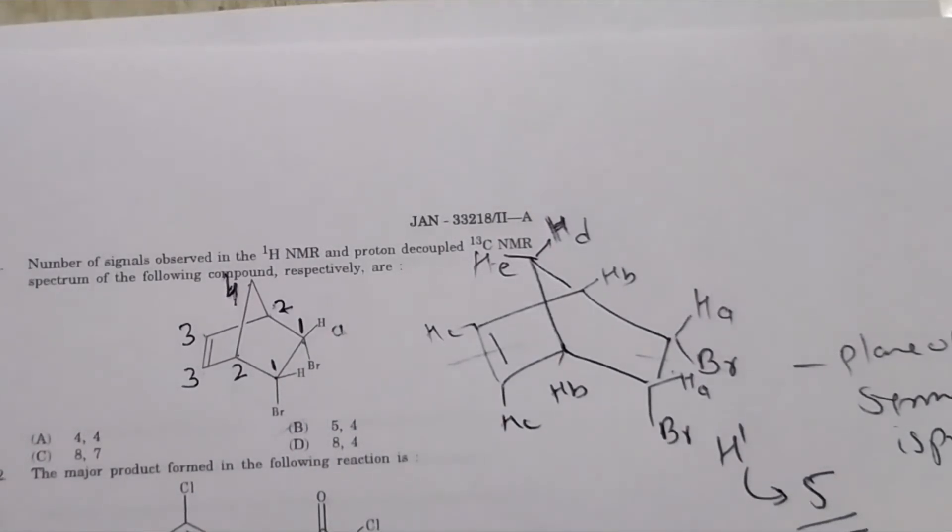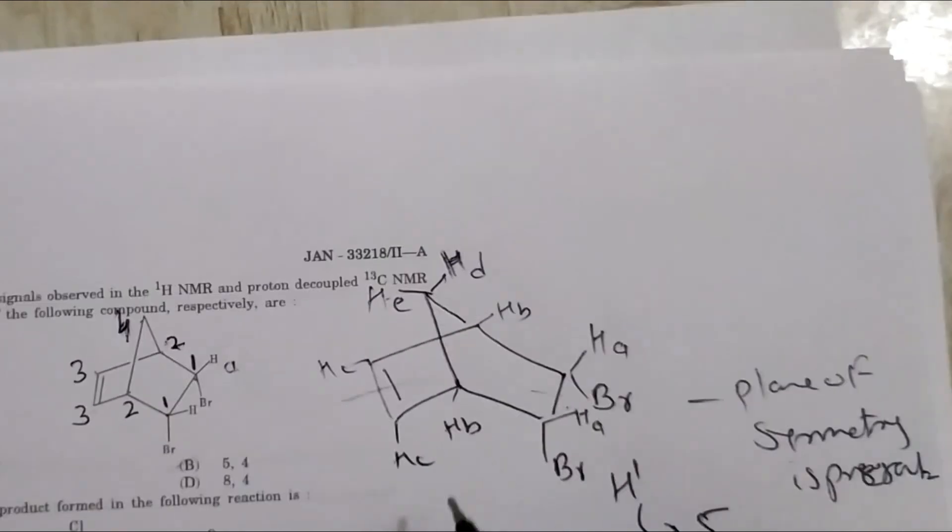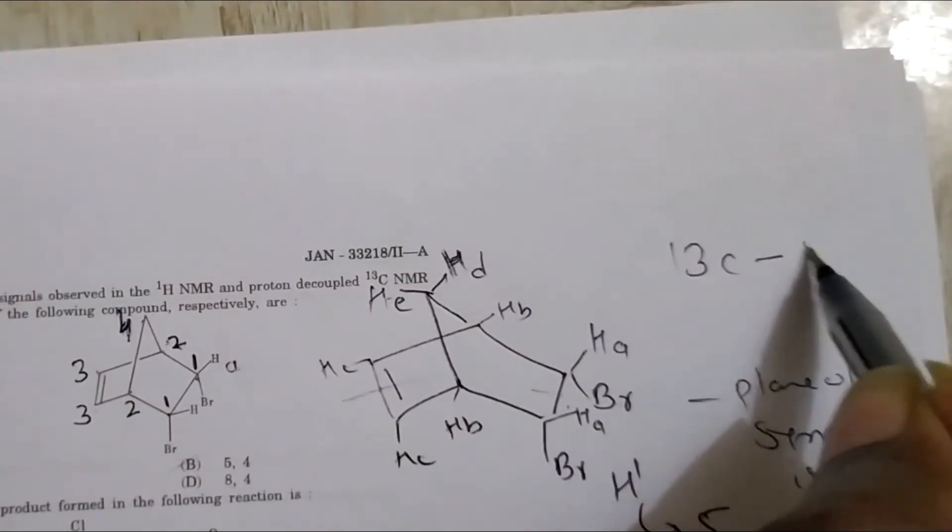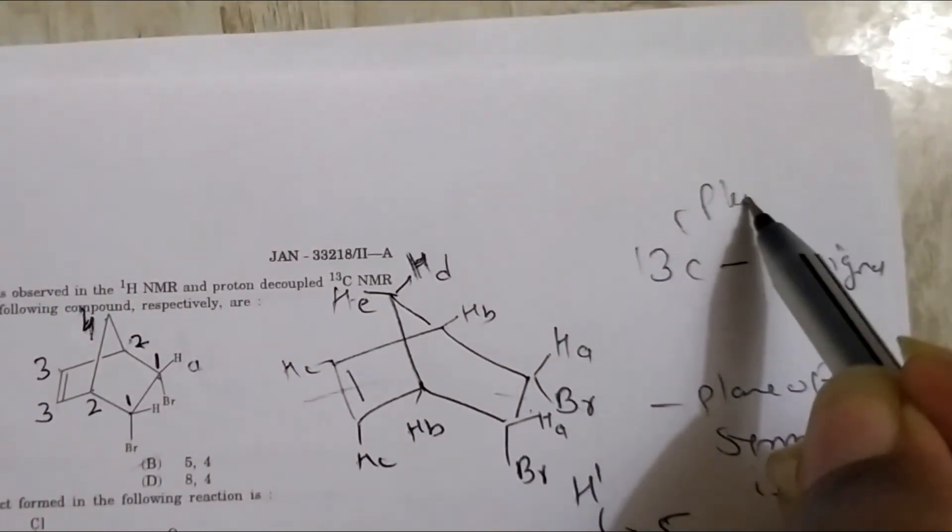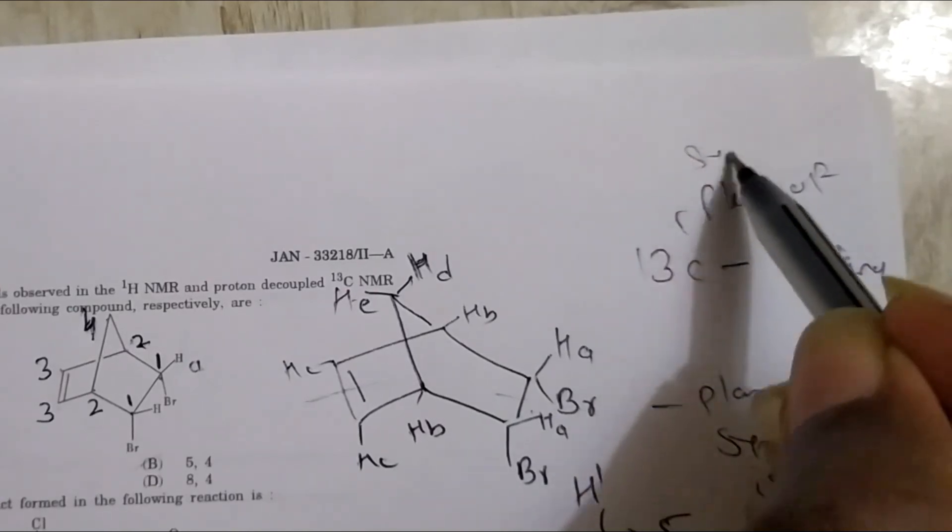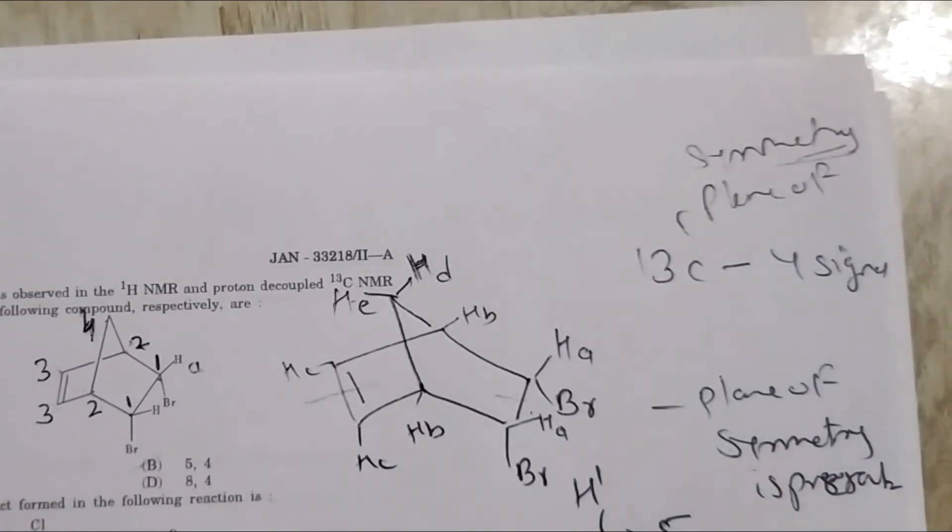So there is 13C decoupled, there are 4 signals of 13C. So of 13C, there are 4 signals, because here also, this plane of symmetry is present. Okay, thank you.